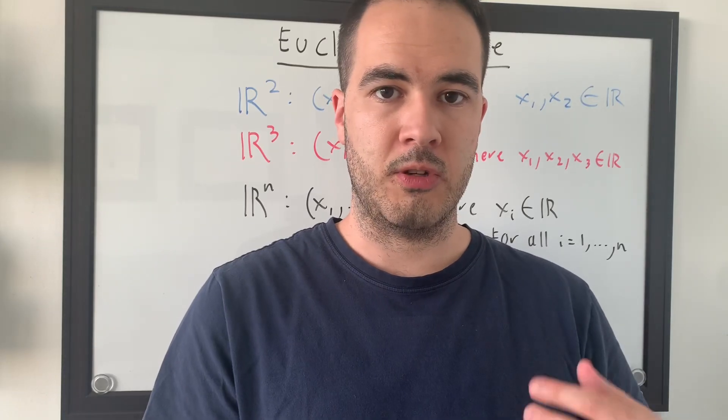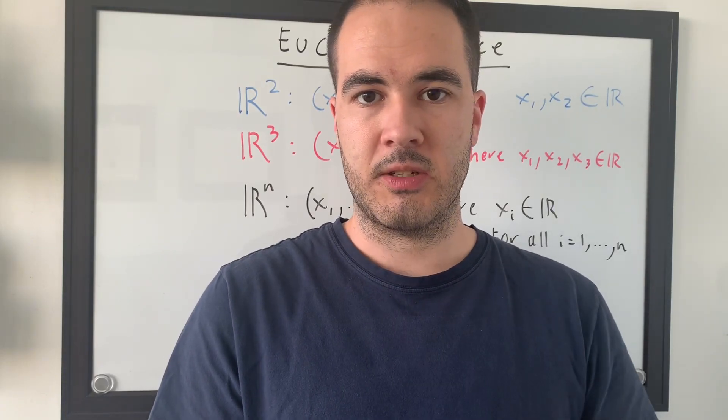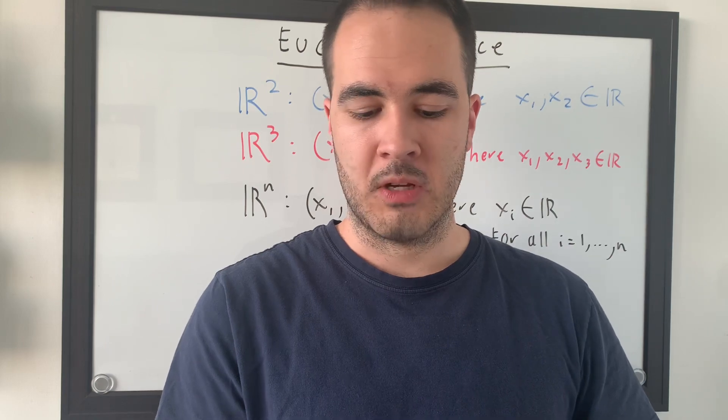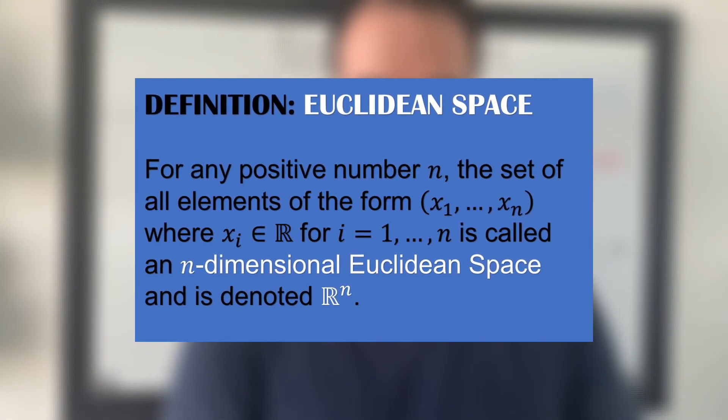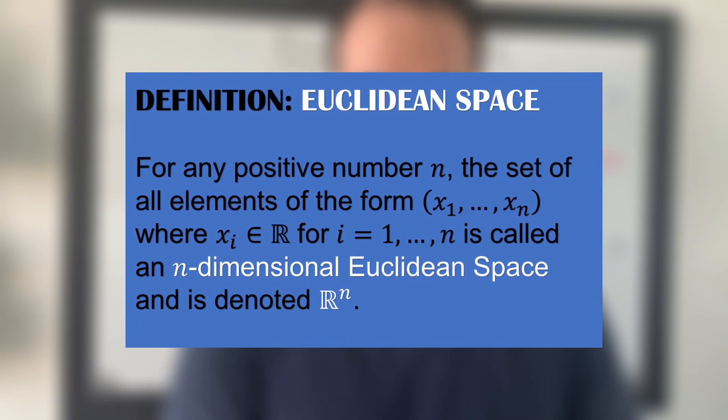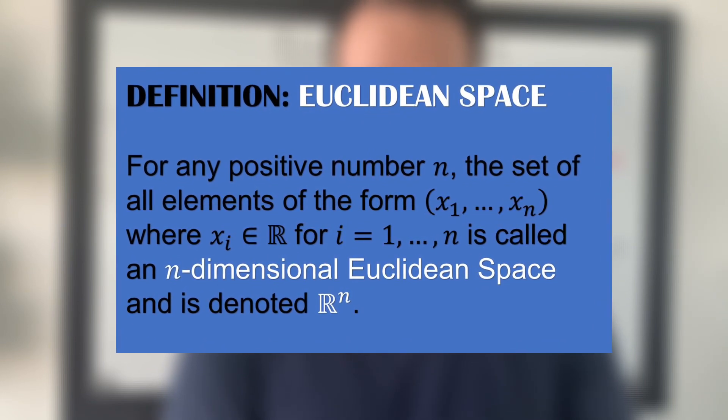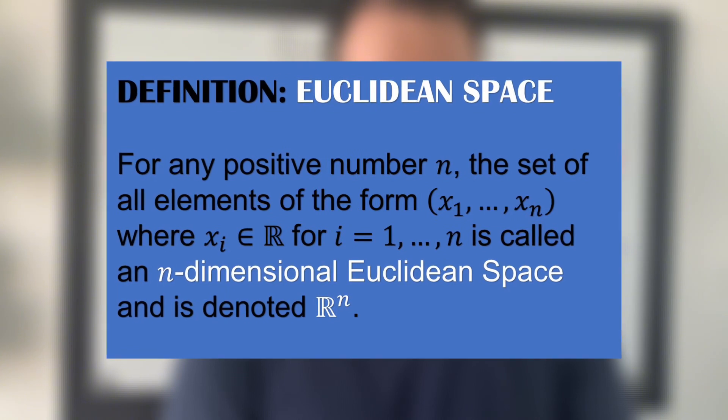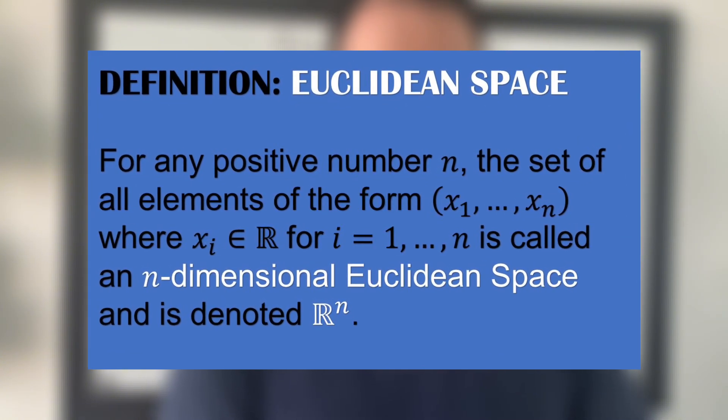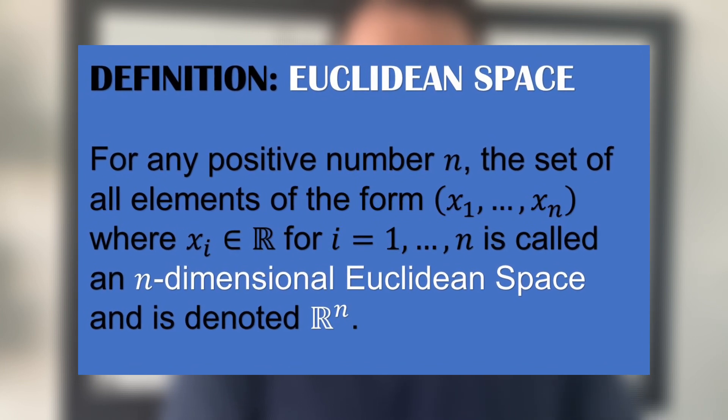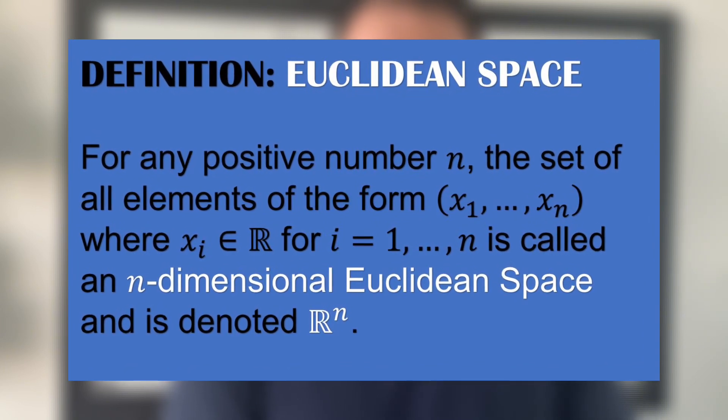Now that we've introduced Euclidean spaces, let's give its formal definition. So, for any positive integer N, the set of all elements of the form X1 to XN, where XI is an element of a real number for all I between 1 and N, is called N-dimensional Euclidean space and is denoted RN.